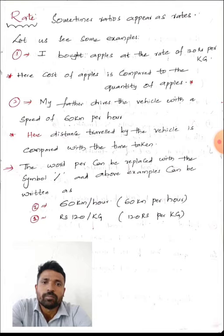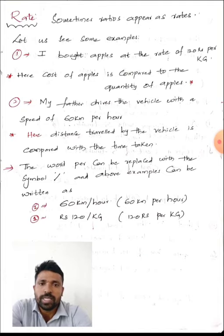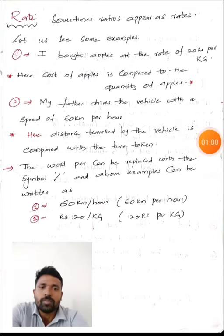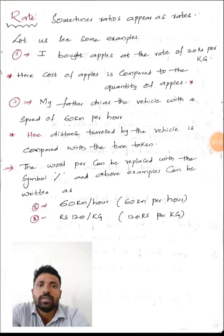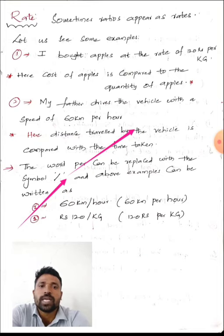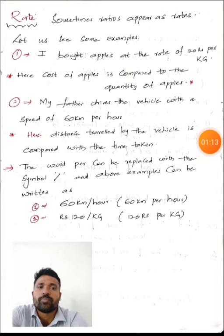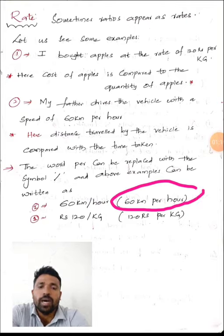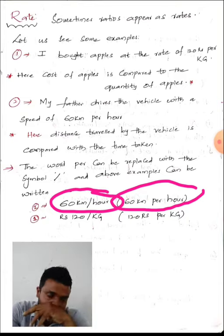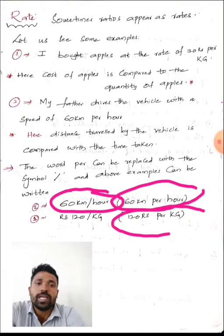One more example: my father drives the vehicle with a speed of 60 kilometers per hour. Here one quantity is 60 kilometers and the other quantity is time in hours. The word 'per' can be replaced with the symbol '/'. So the above examples can be written in symbolic form: 60 km/hr and 120 rupees/kg.